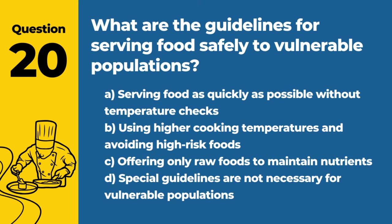Question 20. What are the guidelines for serving food safely to vulnerable populations? Answer: B. Using higher cooking temperatures and avoiding high-risk foods. Vulnerable populations, such as the elderly, young children, and immunocompromised individuals, require stricter food safety practices to prevent illness.